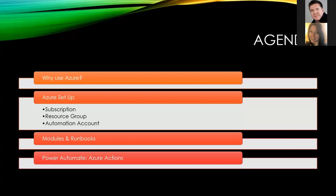A little bit more about what we're going to talk about today. We'll start with why use Azure with Power Automate and what we're trying to accomplish. We'll go pretty quickly through the Azure setup — the things you need concretely to run PowerShell using Azure from Power Automate. Some of this can be a little bit painful, but don't worry about taking notes — the slides do have step-by-step instructions inside them. We'll then go into adding modules and working on runbooks, and then I'll show you a couple of real-world use cases in Power Automate.